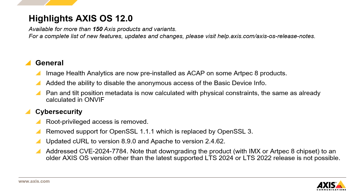Moving into cybersecurity-related updates: root privilege access to Axis products and ACAP applications has been removed indefinitely, without the possibility to enable it back. This will improve overall security and integrity in AxisOS. We also removed support for OpenSSL 1, which is replaced by OpenSSL 3. Older versions will remain available in LTS tracks and will be updated separately. As usual, we updated the curl and Apache versions to the latest available versions to increase the overall cybersecurity level.